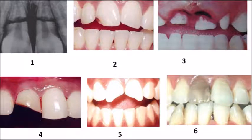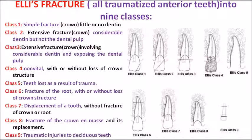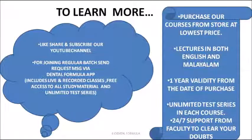To summarize: Ellis classification applies only to anterior teeth. Class 1 — enamel only; Class 2 — enamel and dentine, no pulp; Class 3 — pulp exposure; Class 4 — non-vital tooth; Class 5 — entire tooth lost; Class 6 — root fracture only; Class 7 — displacement within socket; Class 8 — entire crown fracture; Class 9 — injuries to deciduous teeth. Thank you!